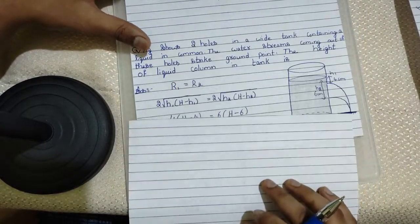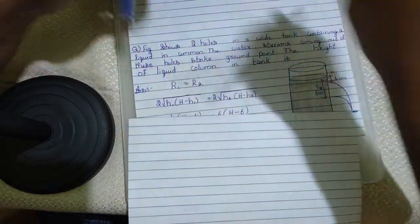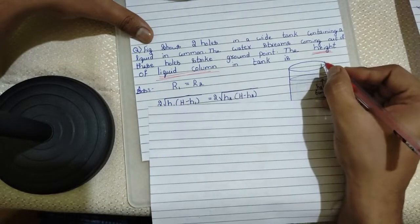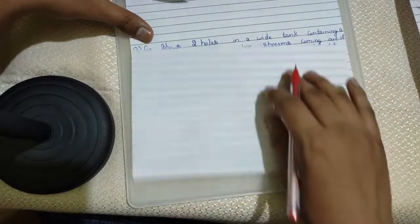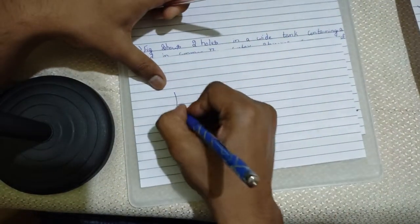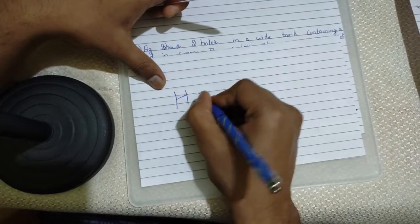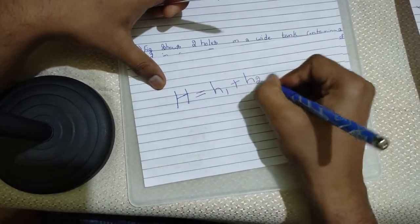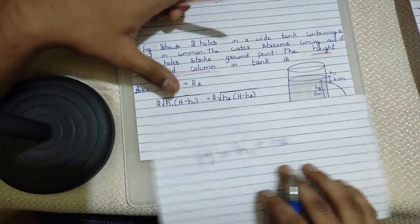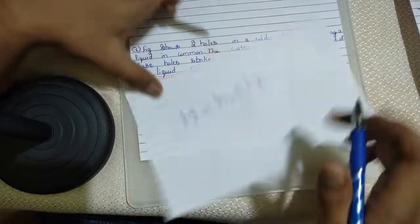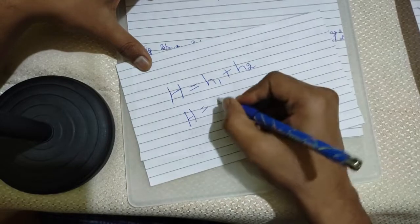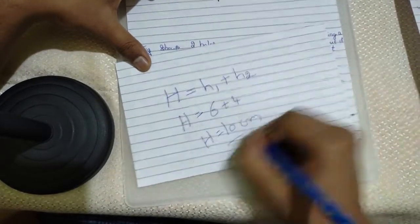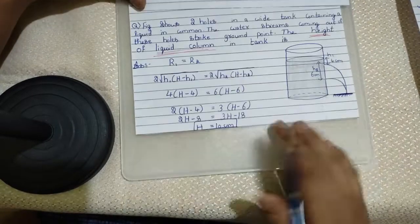Whenever you are given with this type of question, when you are asked to calculate the height of the liquid column, then the height of the liquid column will be sum of the heights. Very simple. What are the heights they have given? 6 cm and 4 cm. So, 6 plus 4, 10 cm.